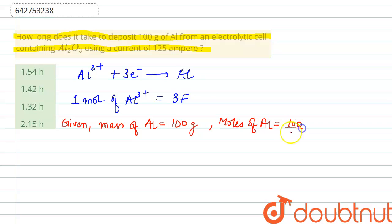If one mole of Al³⁺ forms aluminum when it gains a charge of three Faradays, therefore our 100/27 moles will require proportionally more charge.